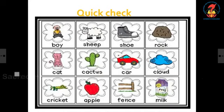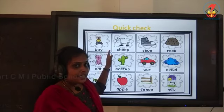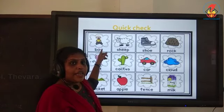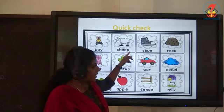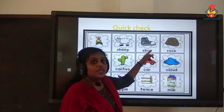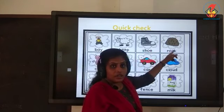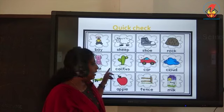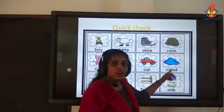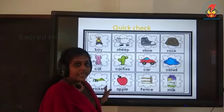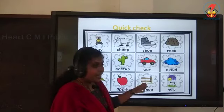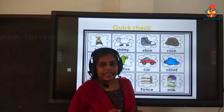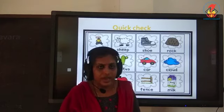Let's have a quick check. I will say a word and you try to answer before I do. Is this boy a living thing? Yes. Sheep? Yes, it's a living thing. Shoe? No, it's a non-living thing. Rock? No, it's a non-living thing. Cat? It's a living thing — it has life. Car? It's a non-living thing. Cloud? Also a non-living thing. Cricket? It's an insect — it has life, so it's a living thing. Fence? Non-living thing. Milk? Non-living thing.